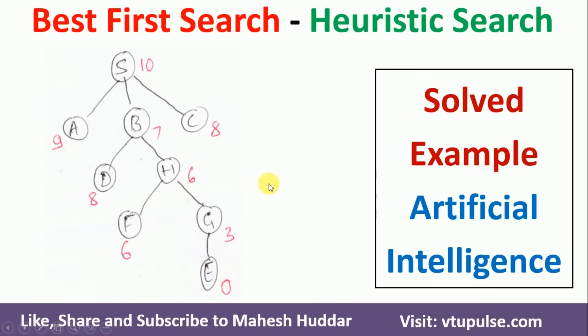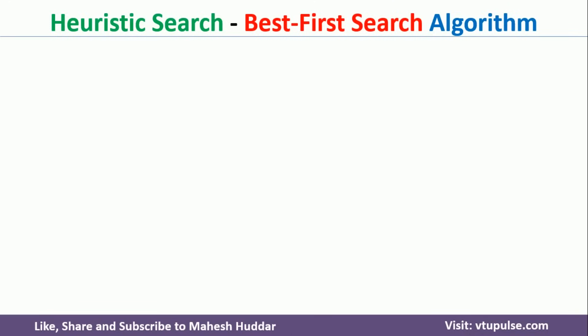Welcome back. In this video I will discuss the best first search algorithm in artificial intelligence with a simple numerical example. It is one of the heuristic search algorithms in artificial intelligence. First we will discuss the algorithm part and then we will take one example to understand this particular algorithm.